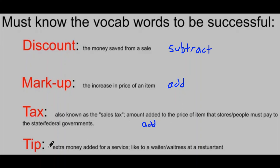The last one is tip. Think about when we used to go to restaurants before COVID-19. We would get a bill and we would add extra money to the bill to give to the waiter or waitress. You need to know these vocab words in order to be successful.